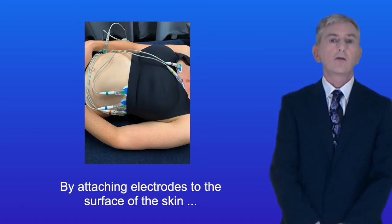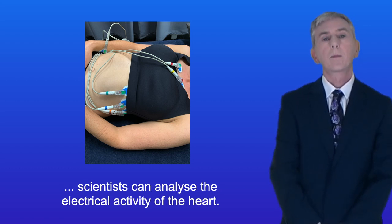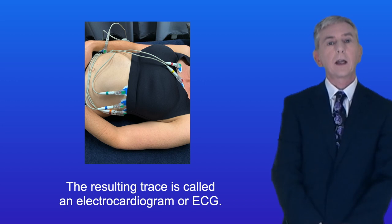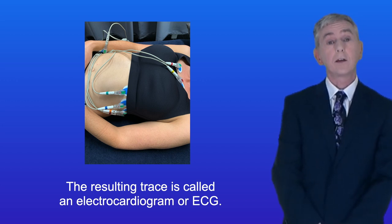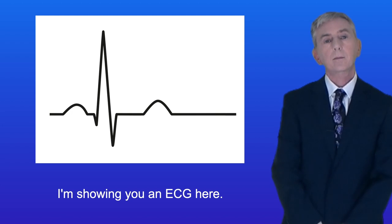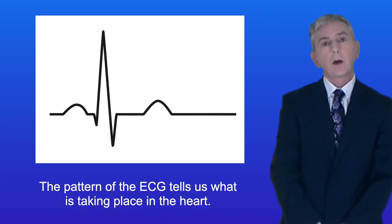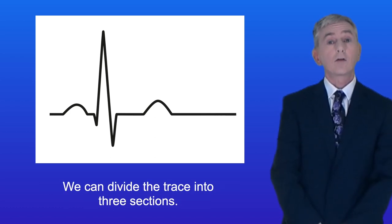Now by attaching electrodes to the surface of the skin, scientists can analyze the electrical activity of the heart. The resultant trace is called an electrocardiogram, or ECG — and I'm showing you an ECG here. The pattern of the ECG tells us what's taking place in the heart, and we can divide the trace into three sections.